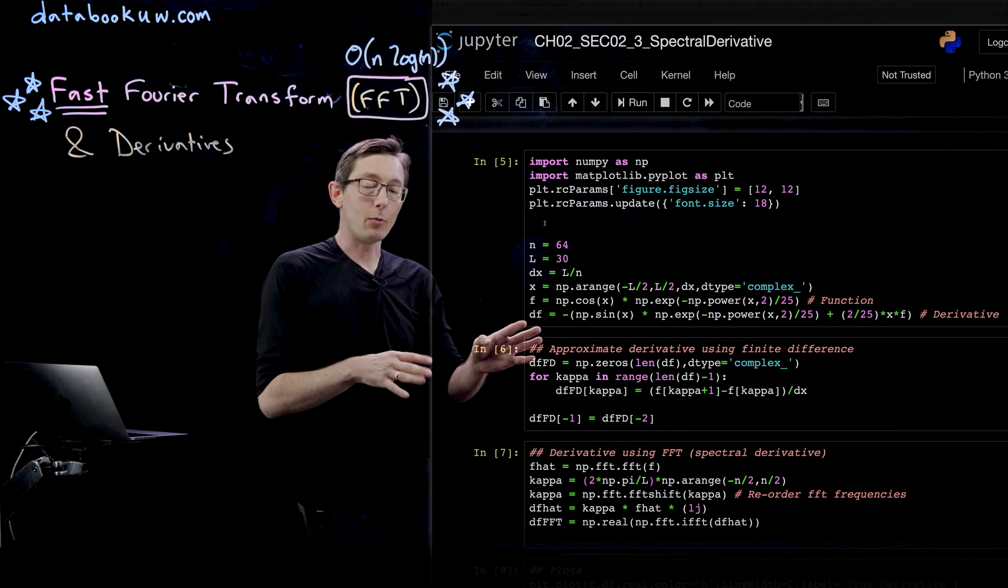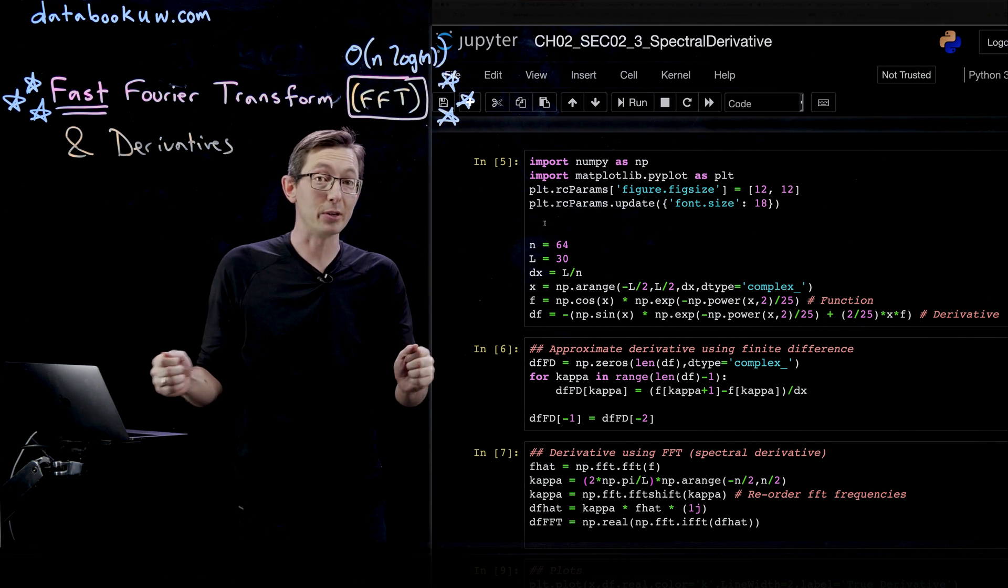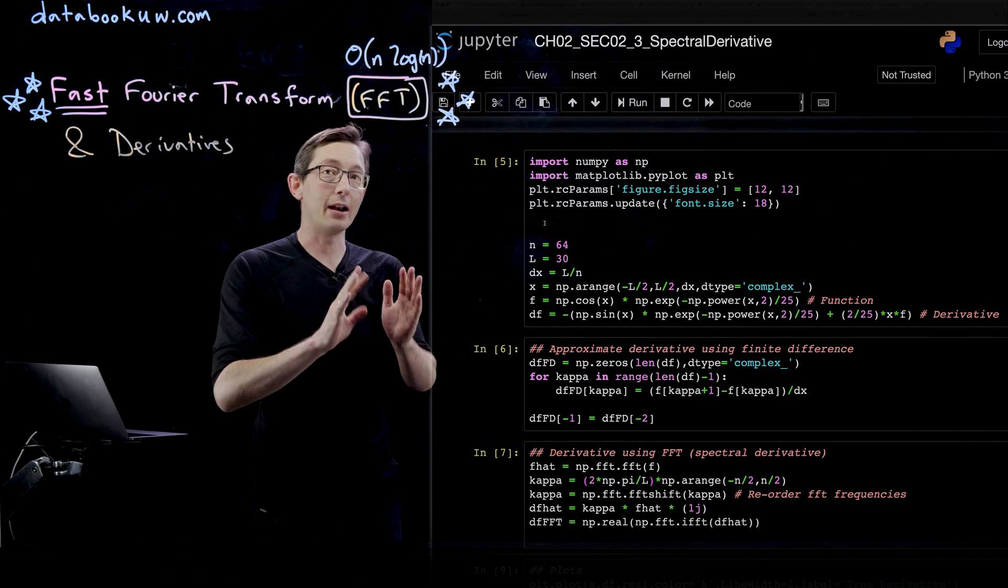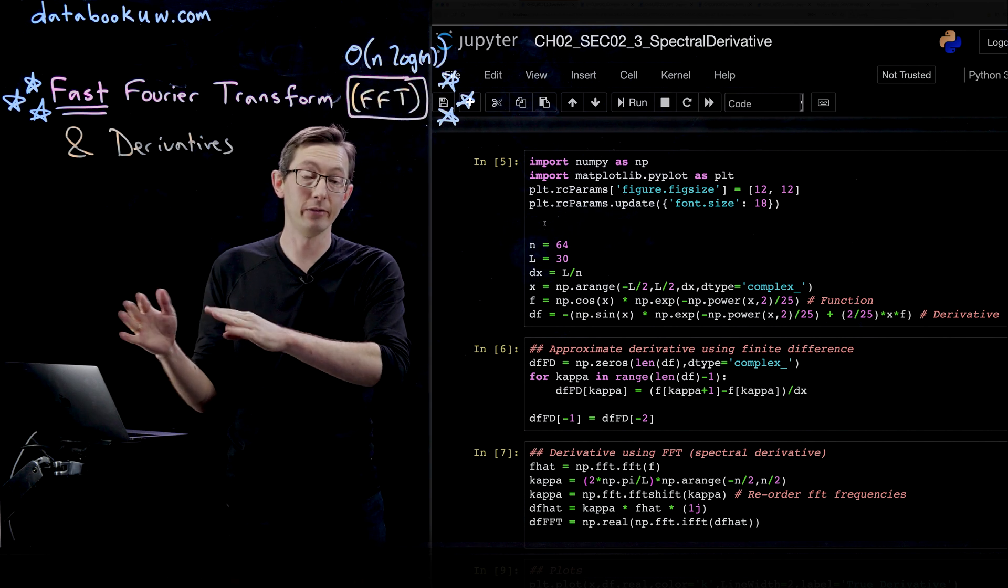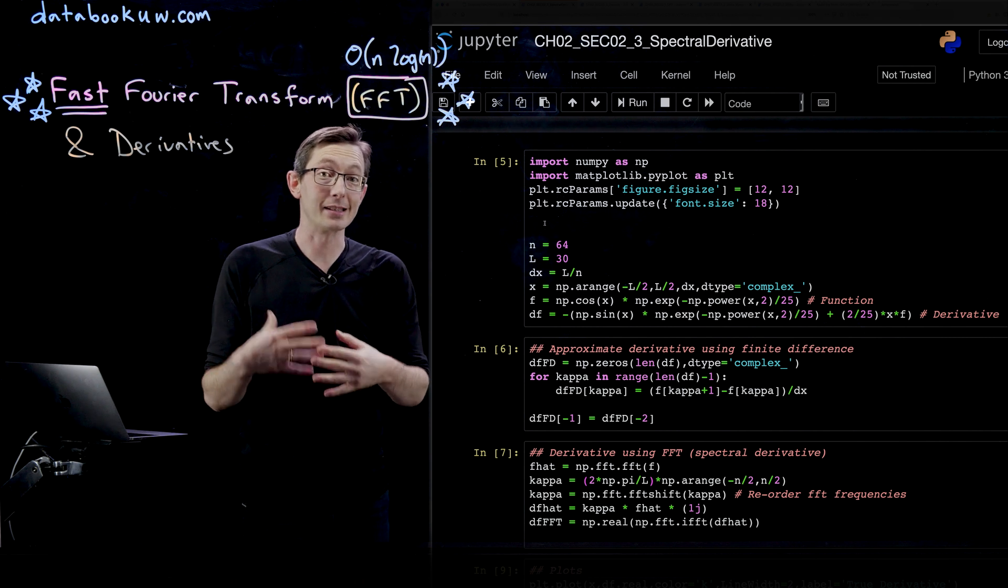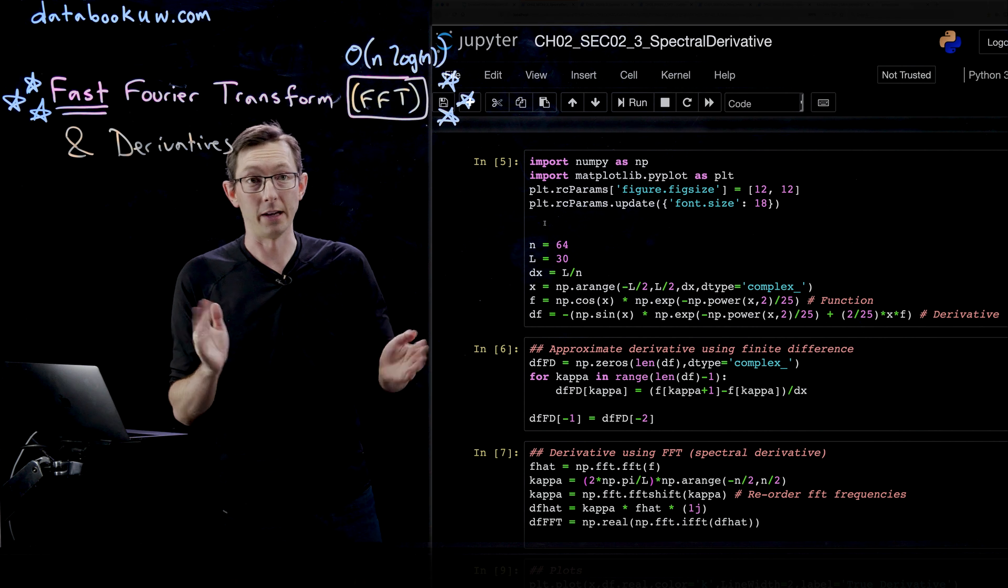In this example, we're going to take a function where we know the derivative, we can analytically compute the exact derivative, and we're going to compare how accurate the FFT is compared with that analytic derivative, and we're also going to compare this against the simple finite difference derivative that you would normally do on data.